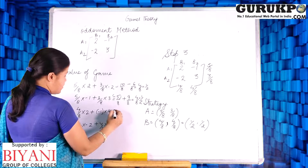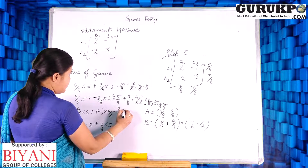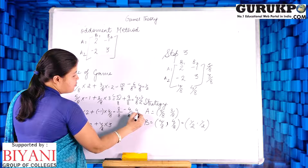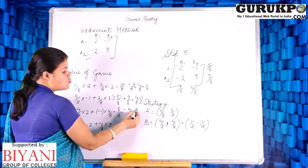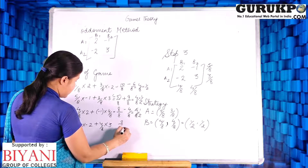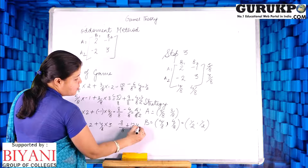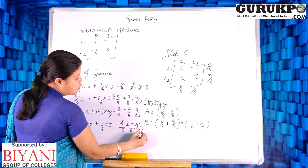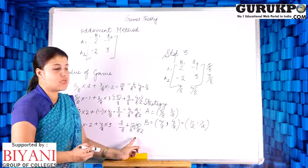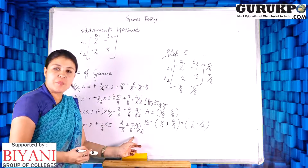Method 3 gives 8/8 − 4/8 = 4/8 = 1/2. Method 4 gives −8/8 + 12/8 = 4/8 = 1/2. So by any of the four ways we get the same value of the game: 1/2.